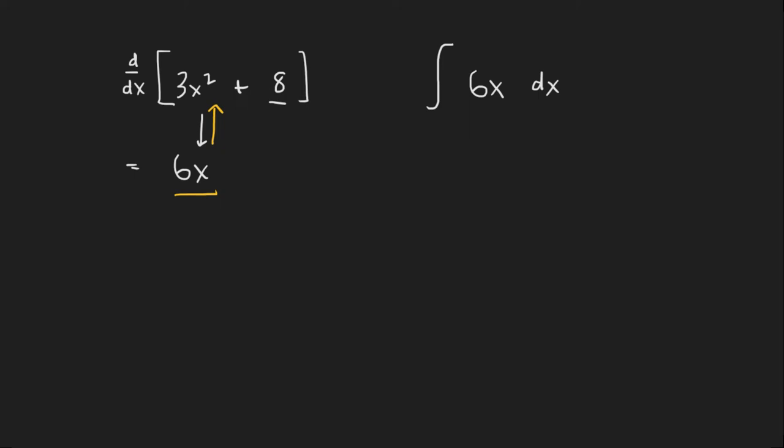So anyway we're basically just reversing this process. We go from 6x back to 3x squared plus 8. So our answer you might think is 3x squared plus 8.